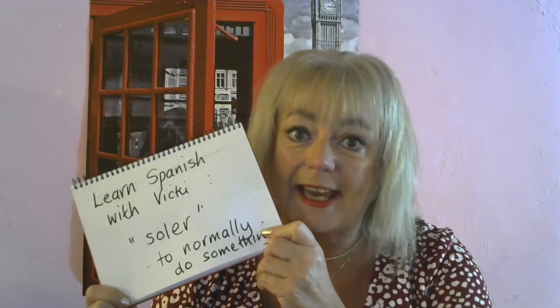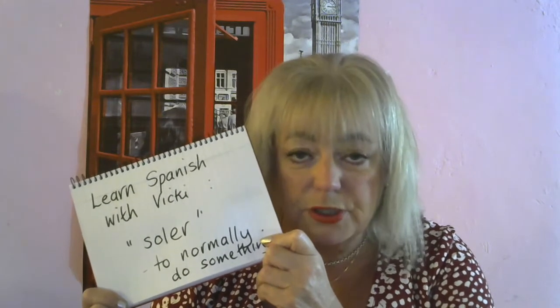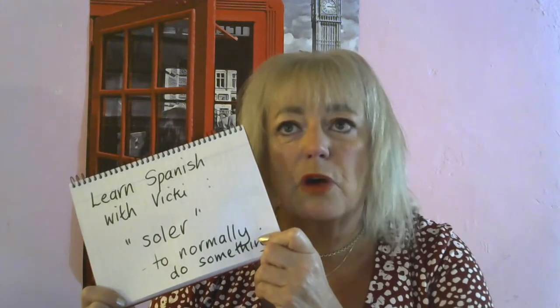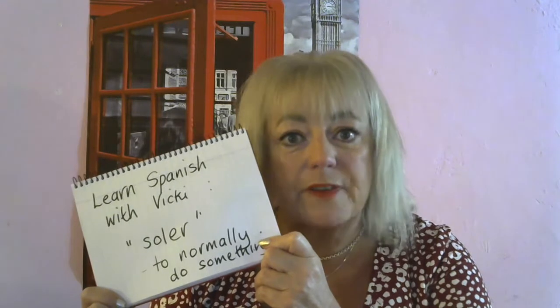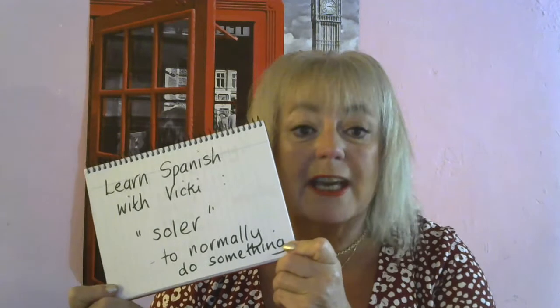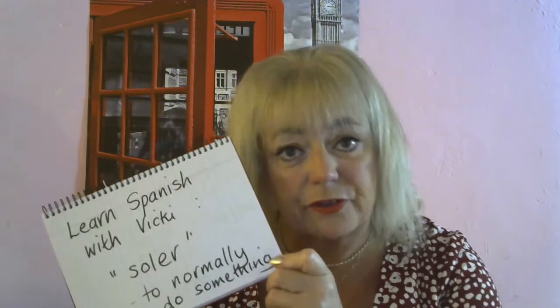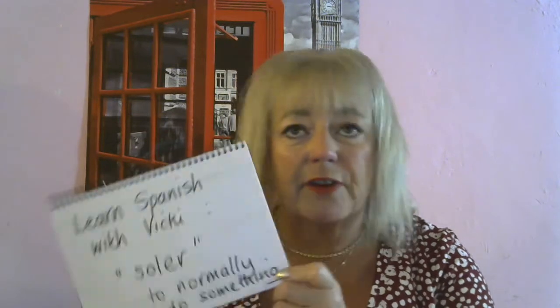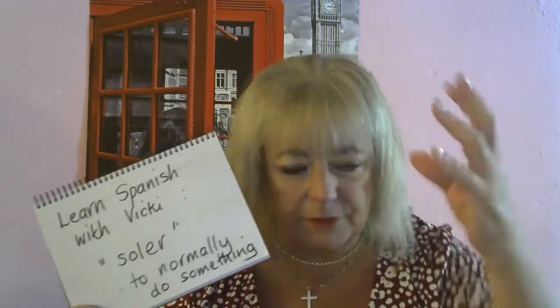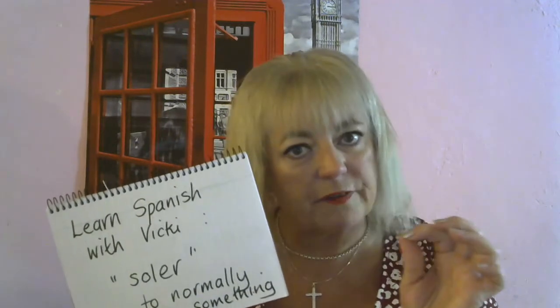So what we're going to look at today is this little verb, soler, which is really quite a handy little verb to use if you don't remember the imperfect tense especially, or even in general, because if you learn how to conjugate this verb, then you only need to use an infinitive after it. So instead of having to learn all different verbs and endings, this verb will serve just on its own for quite a lot of things.